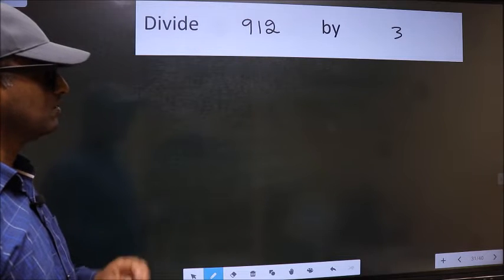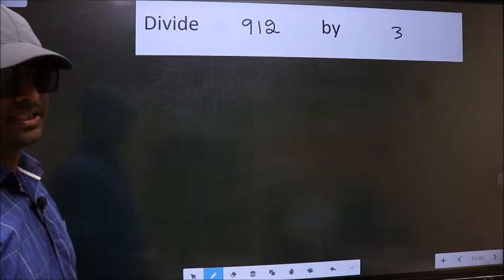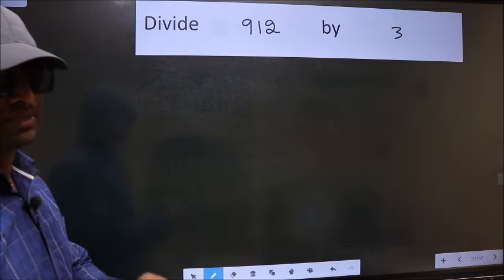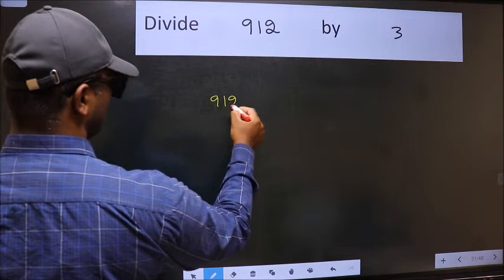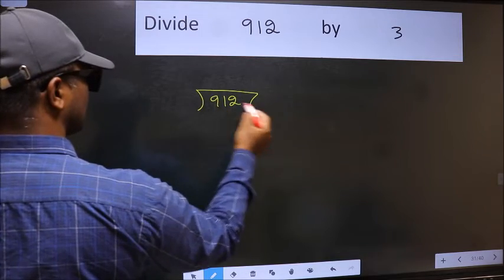Divide 912 by 3. To do this division, we should frame it in this way: 912 and 3 here.